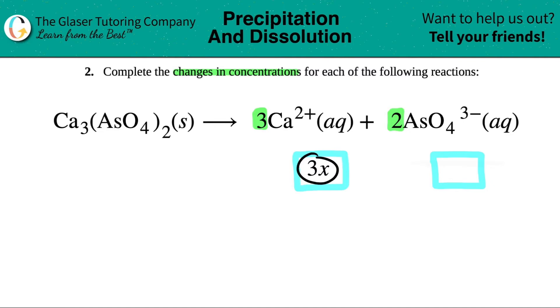In front of the calcium, and the change they just said we don't know what it is so let's label it as x. Now all we have to do is the same thing for the AsO4^3- minus.